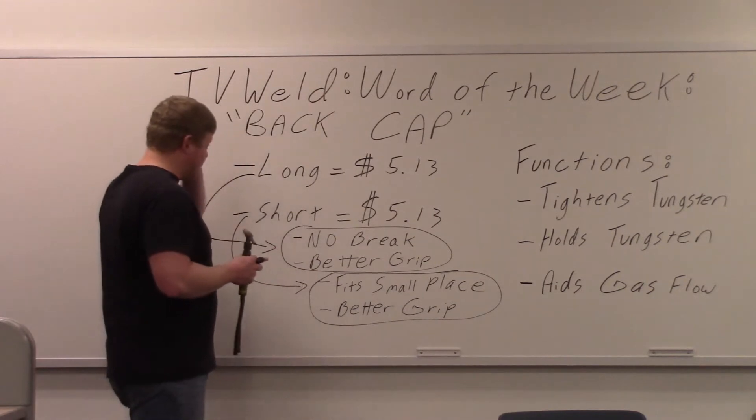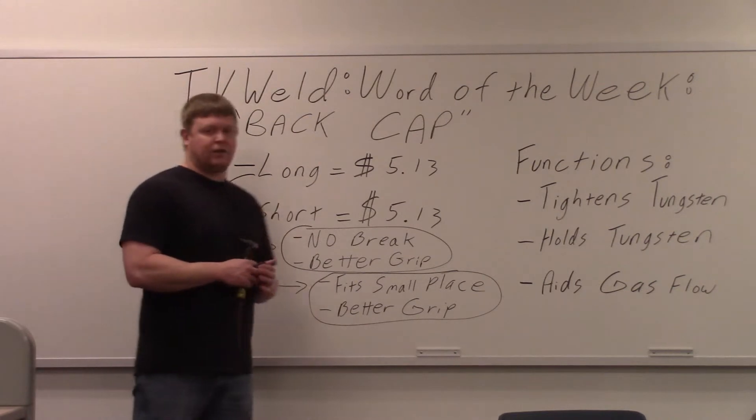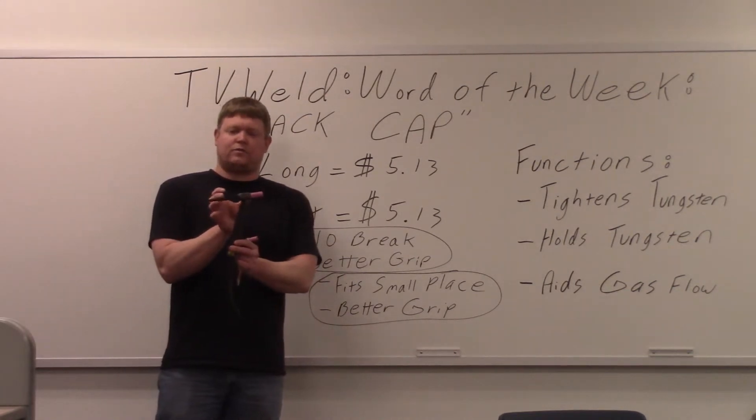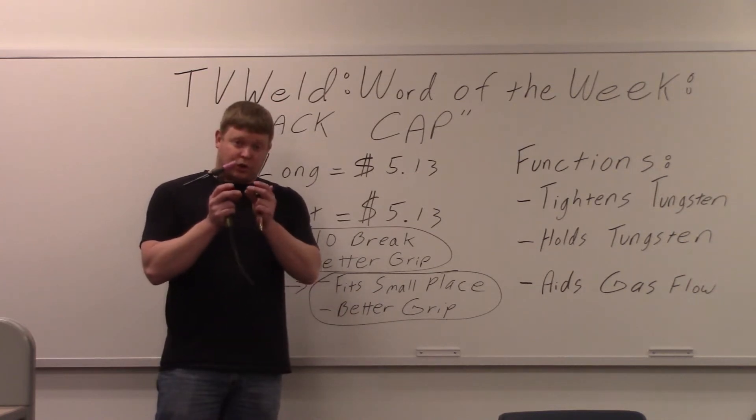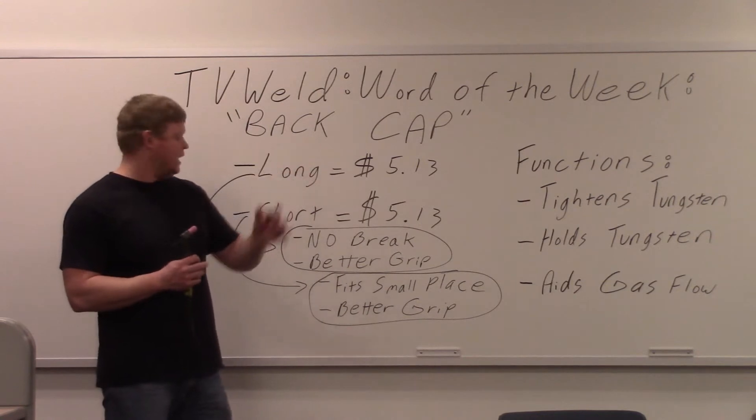I wrote the advantages down here. The long one: no break. What does that mean? You don't have to break the tungsten. An entire length of tungsten will fit in this torch, so you don't have to break it. It also makes it easier to sharpen because you're not close to the grinder with your fingers, as if you were going to use this little tiny one here.